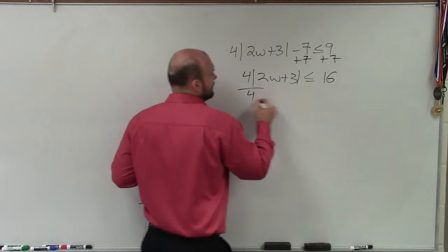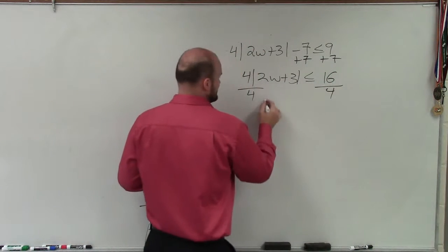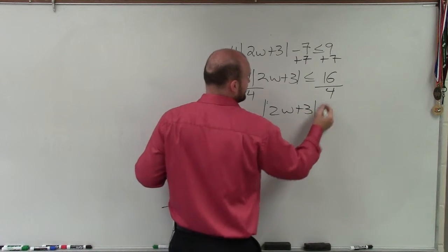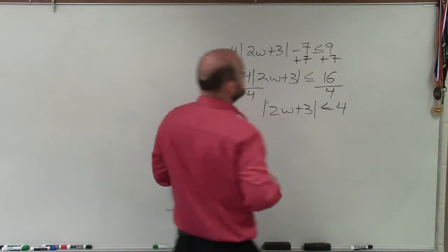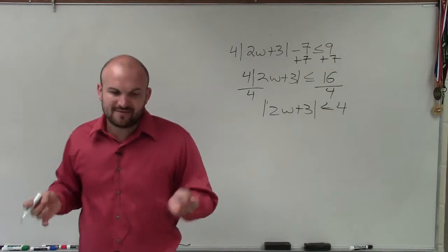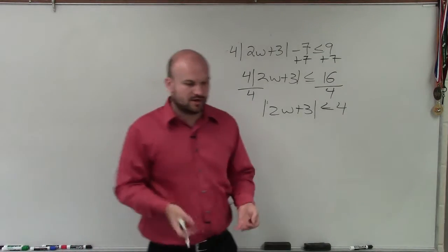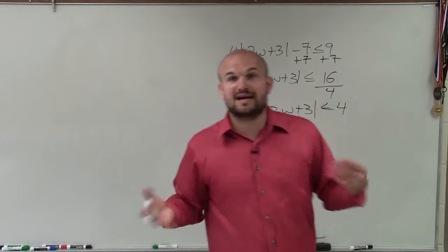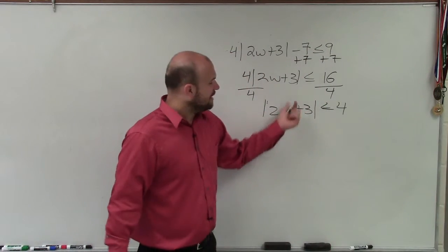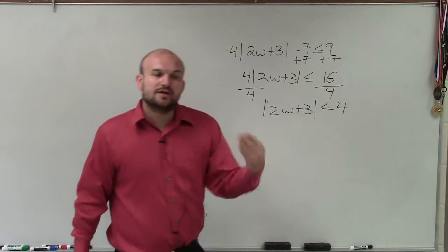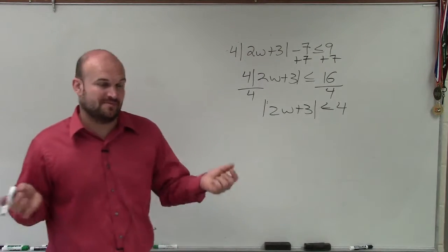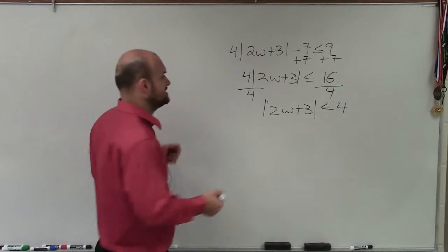Then I'll divide by 4 on both sides, and I have the absolute value of 2w plus 3 is less than or equal to 4. So now I have my two cases. Whenever you have an absolute value inequality and you're creating your two cases, you're going to create a compound inequality. When you start off with less than or equal to 4, your compound inequality is going to be an 'and' inequality — that means we're going to look for the intersection of our two cases.